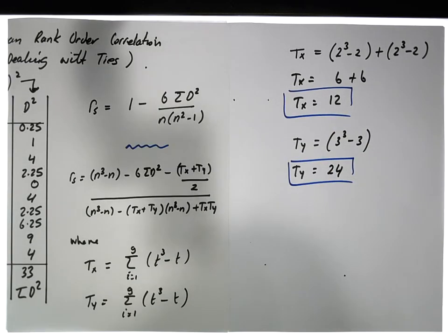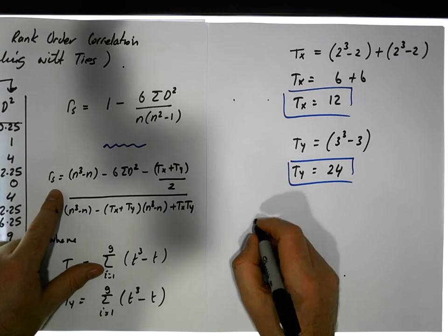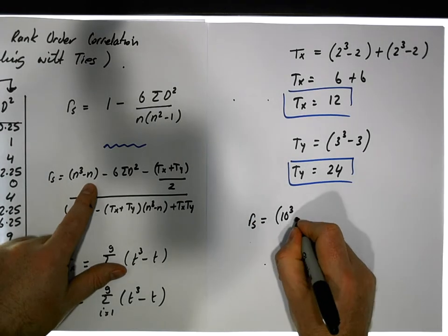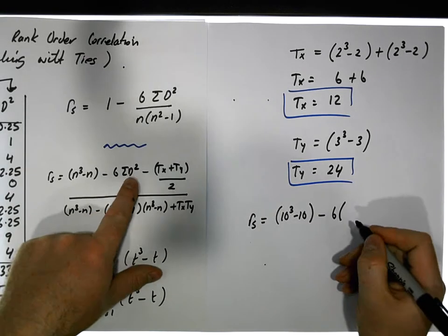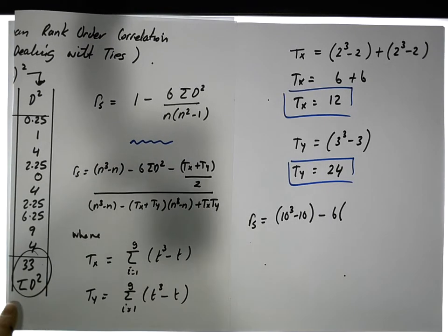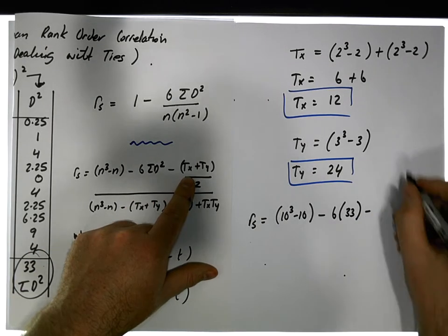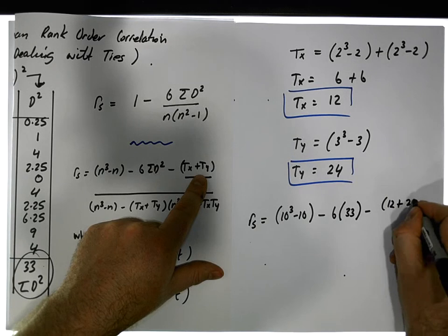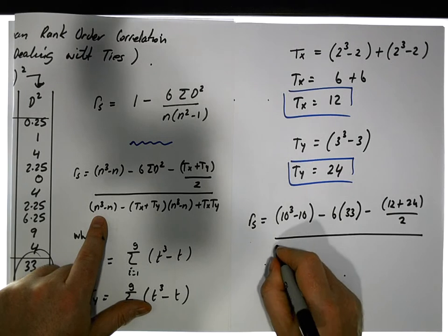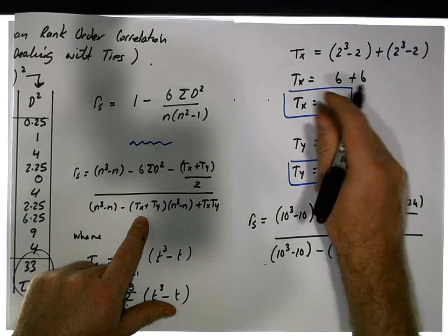Now that we know T(x) = 12 and T(y) = 24, we can calculate r_s. The formula is: r_s equals [n³ − n − 6(Σd² + T(x) + T(y))] divided by [n³ − n − (T(x) + T(y))]. With n = 10: n³ − n = 1000 − 10 = 990. So numerator is 990 − 6(23 + 12 + 24)/2. The denominator is 990 minus the correction terms 12 plus...